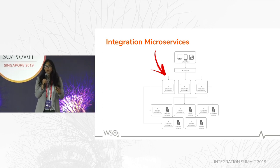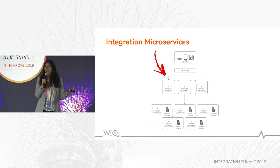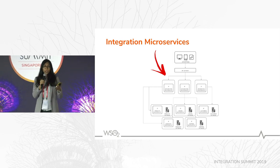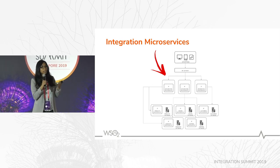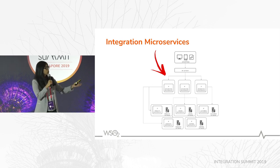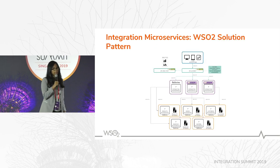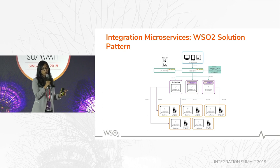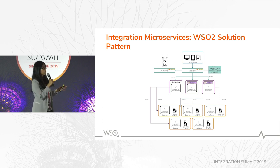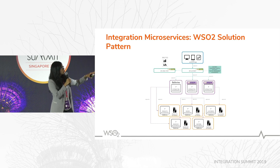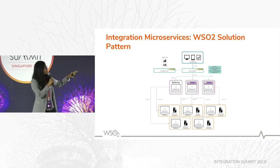In that case, instead of using a centralized ESB — which is an anti-pattern in microservice architecture — you can instead create integration microservices that do the transformations, help you talk to legacy applications, and perform orchestrations for microservice communications. Here you can see how two different open source technologies have been used to implement integration microservices: the Ballerina programming language, and the WSO2 Enterprise Integrator.